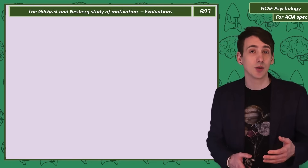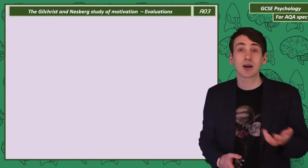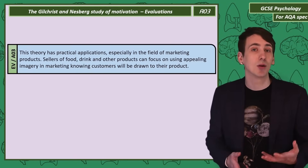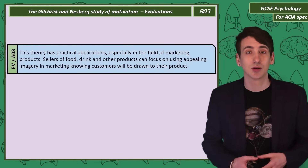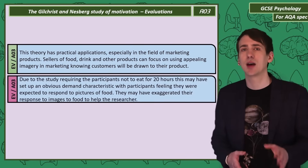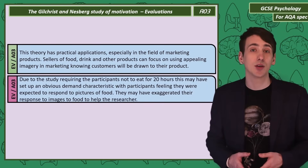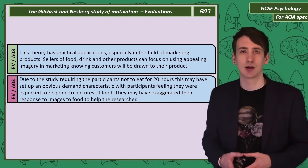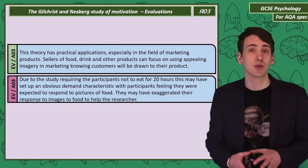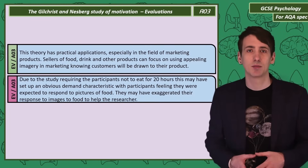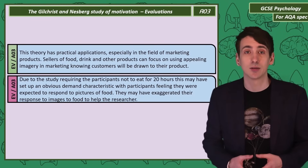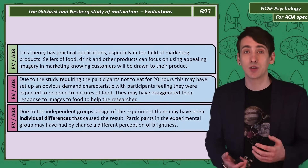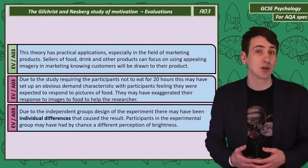Evaluating Gilchrist and Nesberg's study, we can think of practical applications: food marketers may want to focus on how they use imagery knowing it'll attract hungry customers. However, as the experimental group were asked not to eat for 20 hours, this might have set up a demand characteristic, with participants feeling they were expected to respond to pictures of food in an exaggerated way. The study was also an independent groups design, so there could have been individual differences between the groups in their perception of brightness.